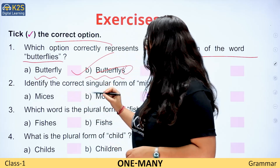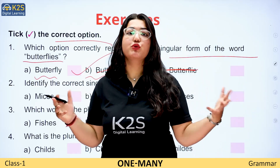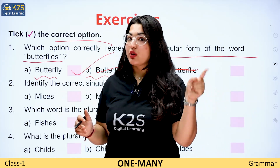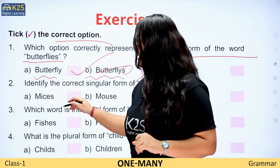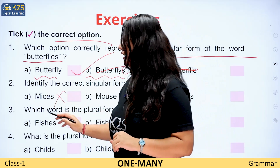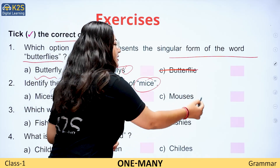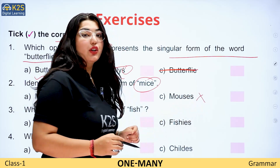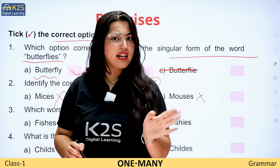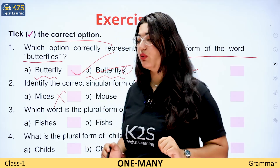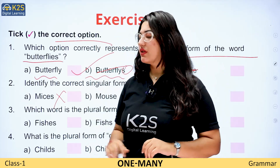Identify the correct singular form of mice. Mice means mouse. What is the singular form of mice? Mices? No, we need singular. Mouses? No, because we need singular and we don't use S and ES. So the right answer is mouse.